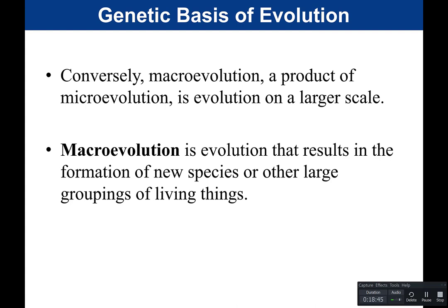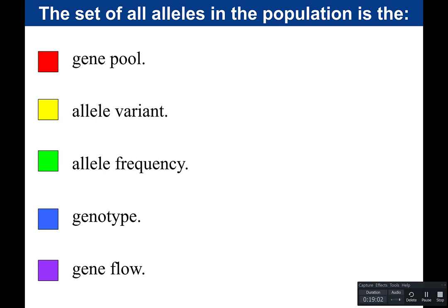The gene pool is the set of all the alleles in the population. There are five forces that can bring about a change in allele frequencies — five agents of microevolution: mutation, gene flow, genetic drift, sexual selection, and natural selection. In the beetle example, color is determined by different alleles. Green is dominant; brown beetles have two brown alleles. The population has 30% brown alleles and 70% green alleles. Allele frequencies change as populations evolve.